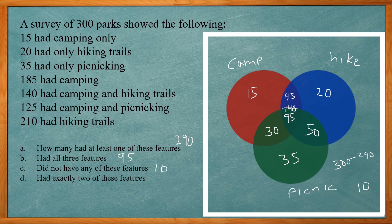And how many had exactly two of the features? So that's where only the sections where two overlap only. So that includes the 30, the 45, and the 50, which gives us 125.